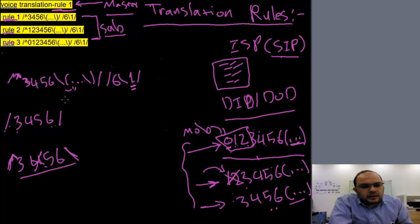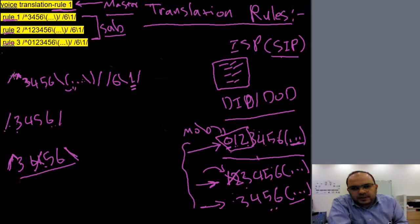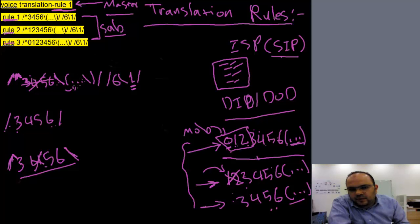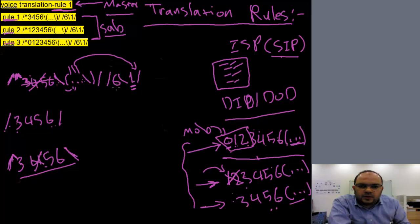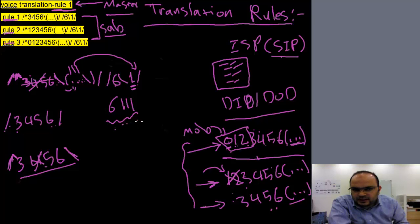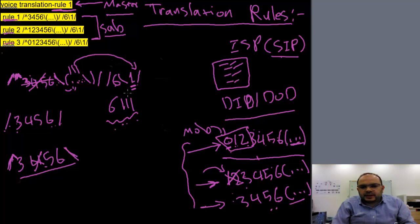If anyone from outside dials 3, 4, 5, 6, 1, 1, 1 — the CUBE sees the slash and hat symbol, so any number beginning with 3, 4, 5, 6 with a backslash means 'remove this.' The CUBE takes the remaining three digits 1, 1, 1 and places them in set number one. The CUBE then adds 6 before this number, making it 6, 1, 1, 1 — which the Call Manager will understand.